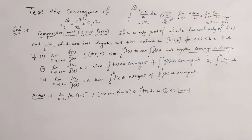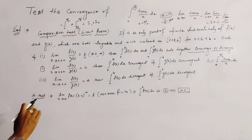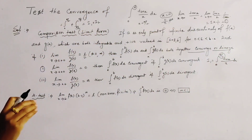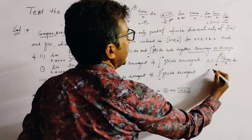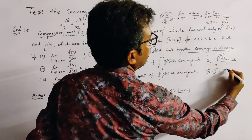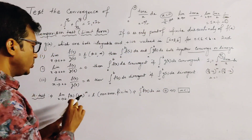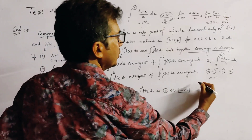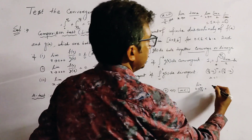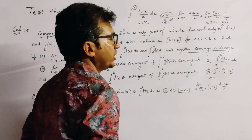Here we use the μ-test directly. Since the point of infinite discontinuity is at the upper limit π/2, we take the factor (π/2 minus x) to the power μ, and here we take μ equal to 1. Now we find the limiting value: limit as x tends to π/2 minus 0 of (π/2 minus x) multiplied by f(x), where f(x) means tan x divided by x.